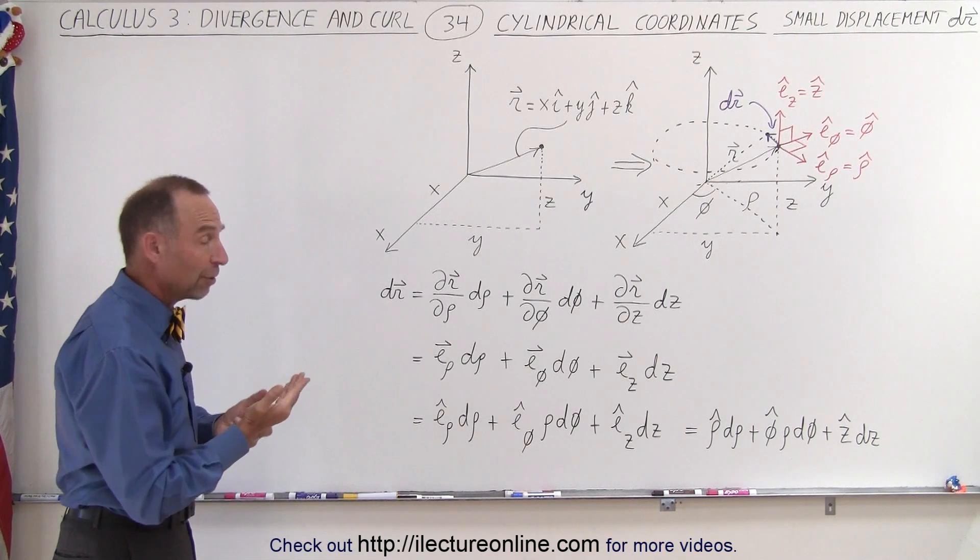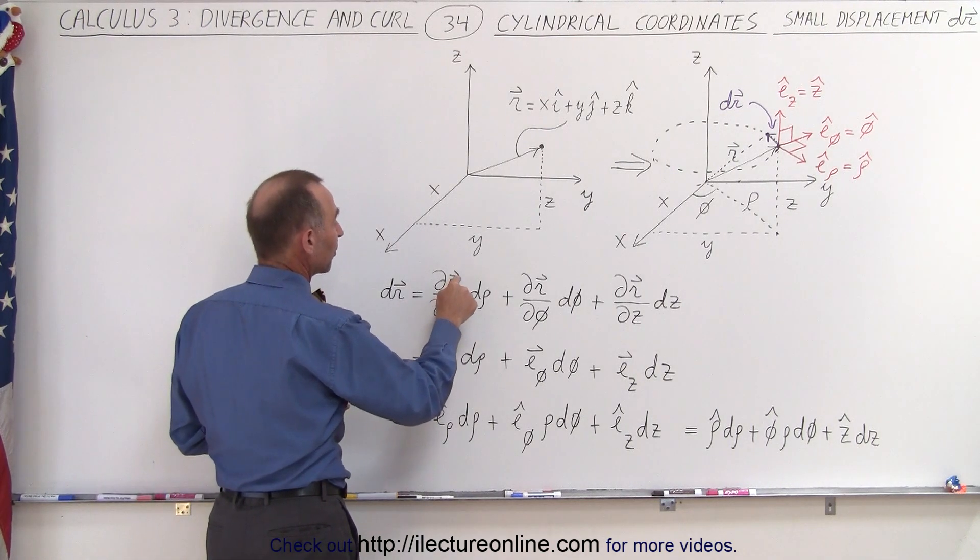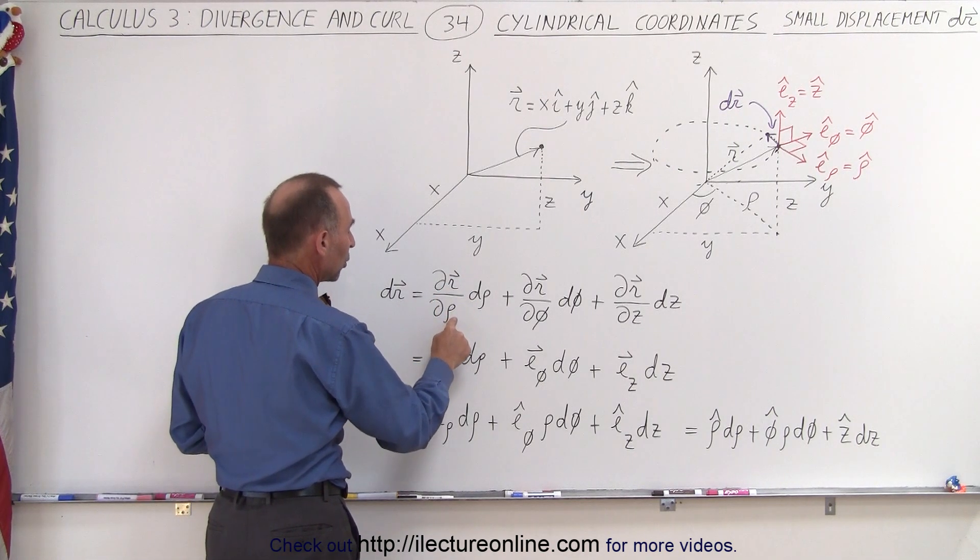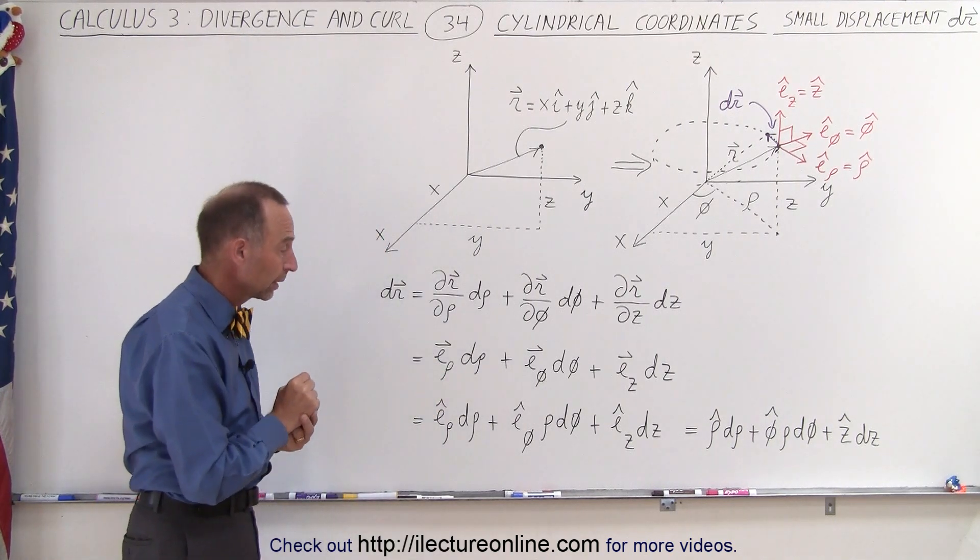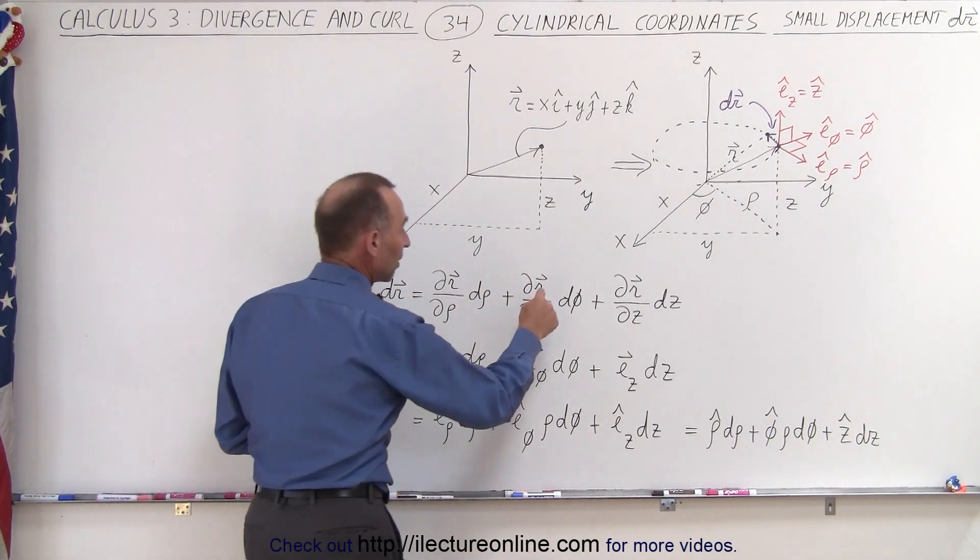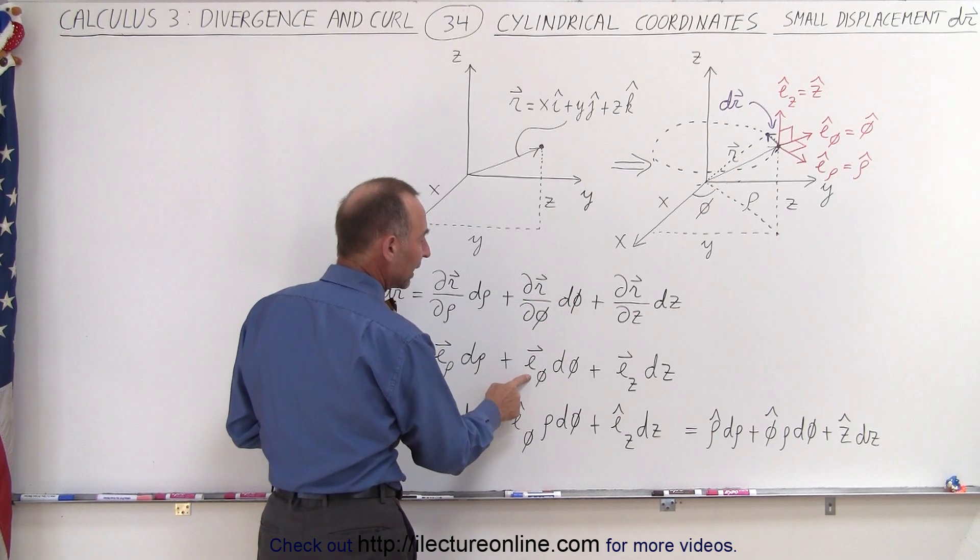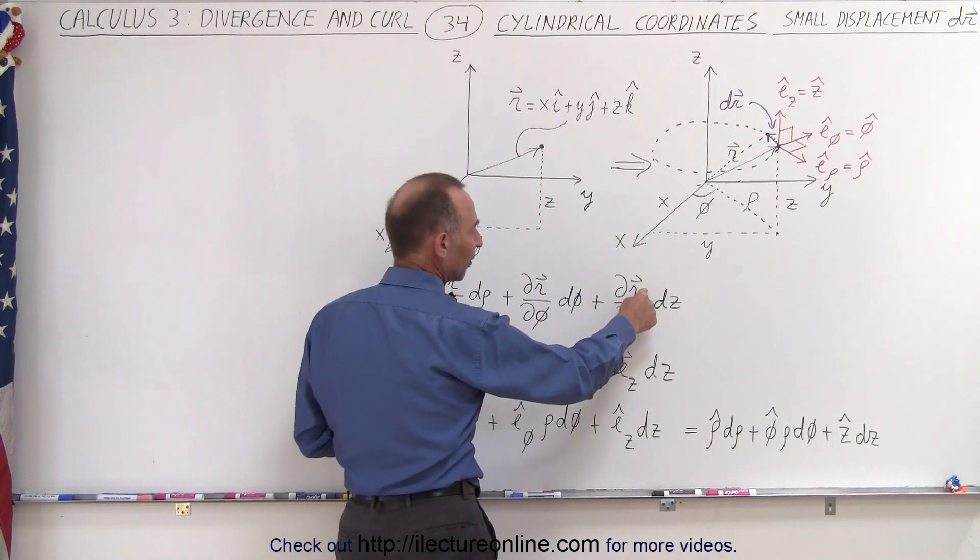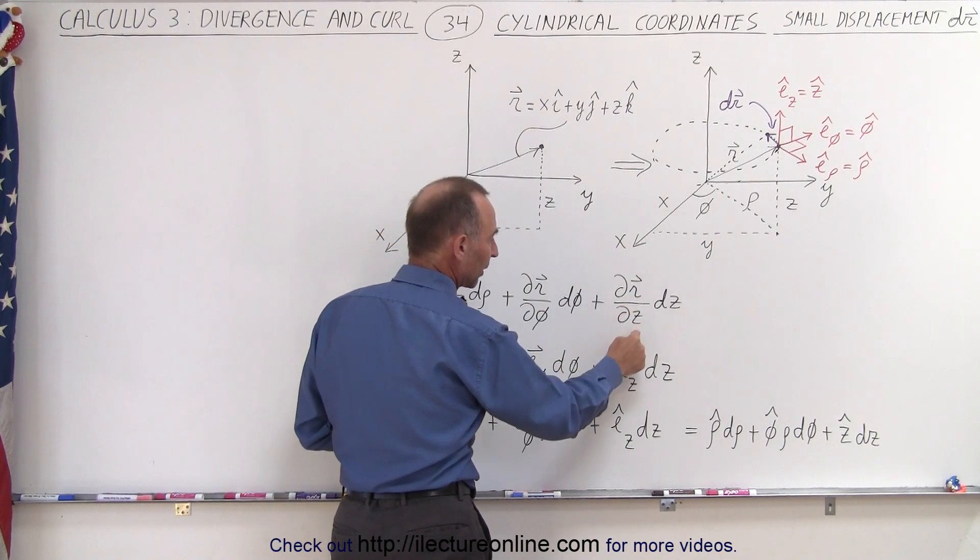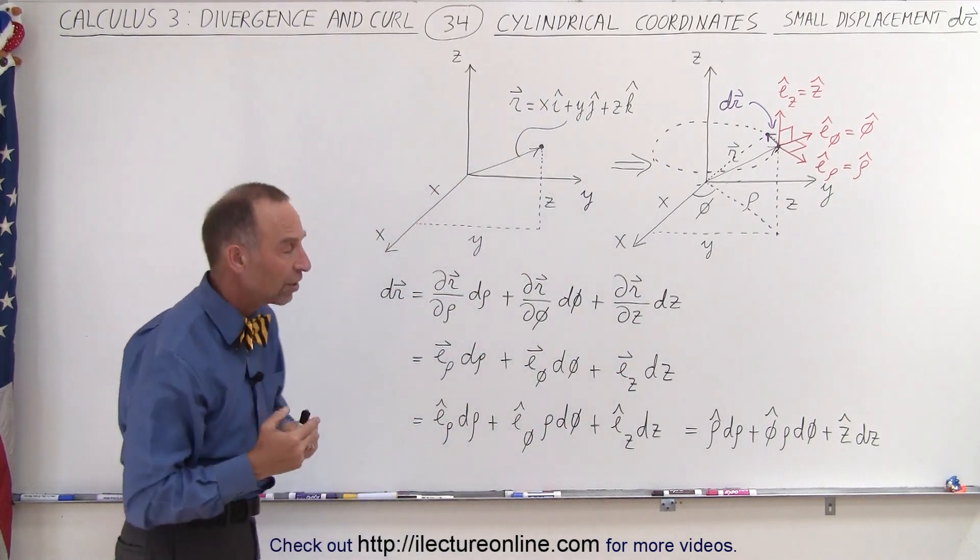Now from the previous video we remember that the partial derivative of the position vector with respect to rho is a vector pointing in the direction of rho, and the partial derivative of the position vector with respect to phi is equal to a vector pointing in the direction of phi, and then finally the partial derivative of the position vector r with respect to z is the vector pointing in the direction of z.